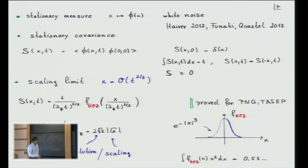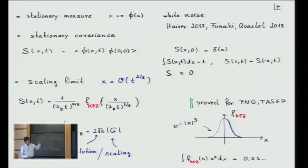This stationary covariance, which I denote by S, starts off as a delta function at time t equals 0 because white noise is stationary and delta correlated. Because of the conservation law, the mass will be conserved, so the integral is always 1. Because of the left-right symmetry it will be an even function, and S is actually a non-negative function. Therefore I can think of this as a probability measure in x at time t — it's the distribution of the second class particle.